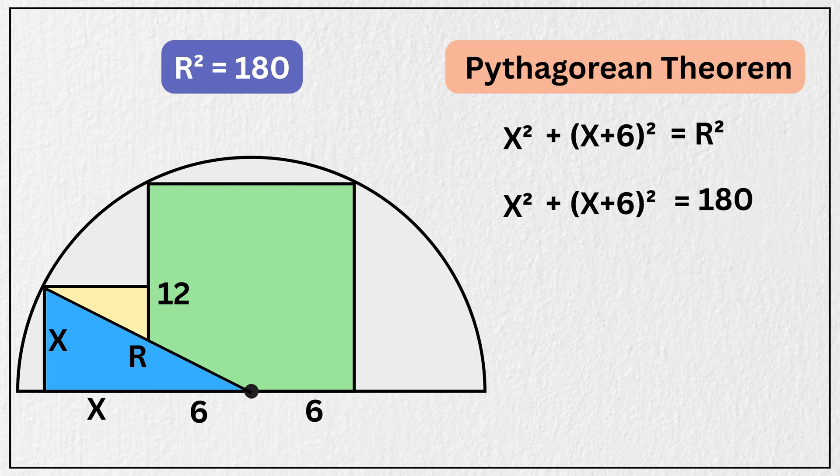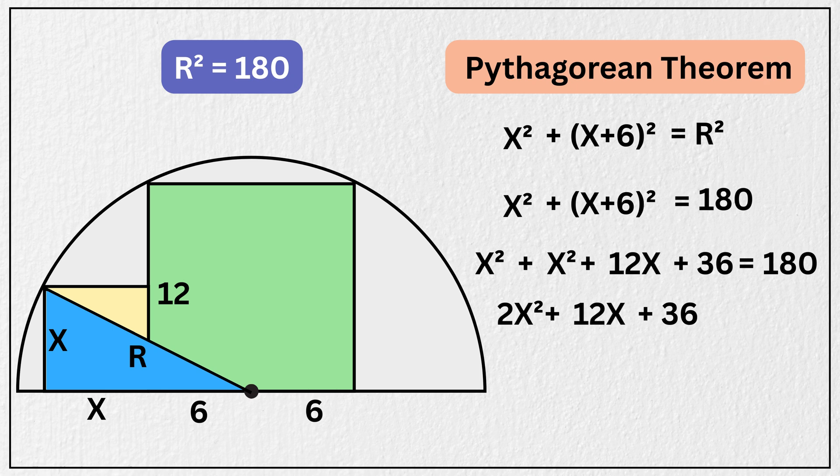Now expanding the squared term we get x squared plus x squared plus 12x plus 36 equals 180. Now combining like terms we get 2x squared plus 12x plus 36 equals 180. Now subtracting 180 from both sides, we have 2x squared plus 12x minus 144 equals 0.